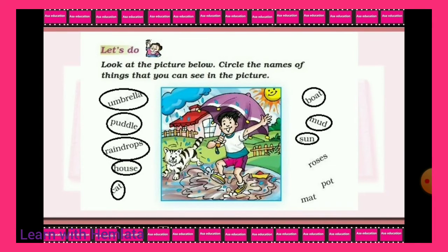Now let's start some exercises. Look at the picture below and circle the names of things that you can see in the picture. It is a picture of the rainy season. So, circle umbrella, puddle, raindrops, house, cat, boat, mud, and sun. These things we can see in the scene of a rainy season. But roses, pot, and mat are not present in this picture.